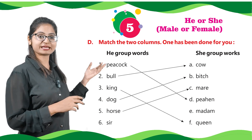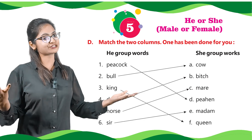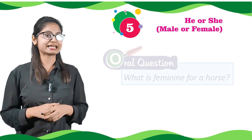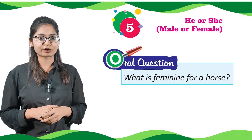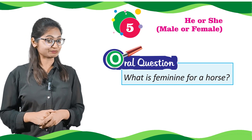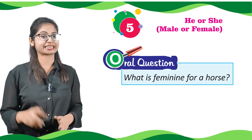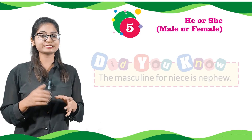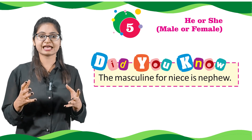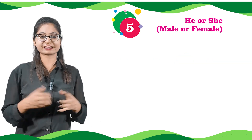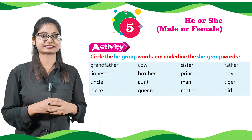We will pick six and draw a line to E and match them. Let me ask you one oral question: what is the feminine for a horse? Yes, that's mare. Did you know? The masculine for niece is nephew. Now let's do an interesting activity.